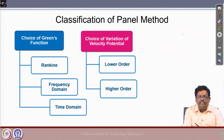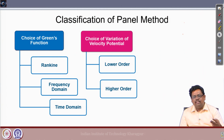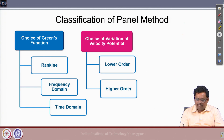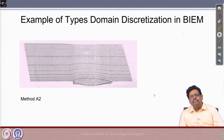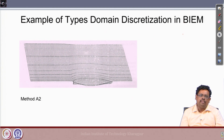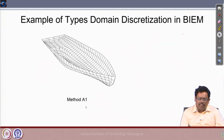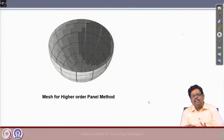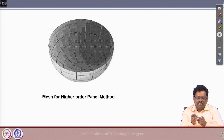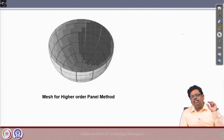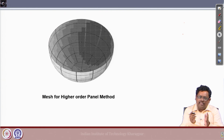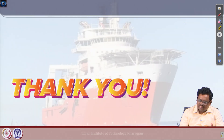There are three choices for the Green's function: Rankine, frequency domain, and time domain. Method A2 is the Rankine panel method and its computational grid is shown. Method A1 shows discretization only of the body. The higher-order panel method uses large curvilinear patches, while the other two use quadrilateral patches. Some more exciting things are coming in future classes. Thank you.